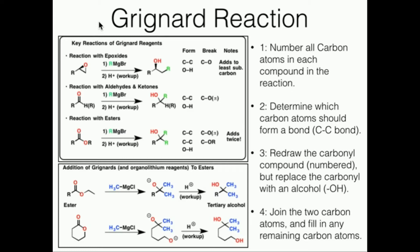The Grignard reaction is difficult to understand in terms of predicting a product, or if you're doing a synthesis, what reagents you'll need. It's useful, however, for forming carbon-carbon bonds. It's one of the few reactions in all of organic chemistry where you can actually form carbon-carbon bonds. Although it's difficult to predict products, I've developed a method here that works for every single one of these types of problems.